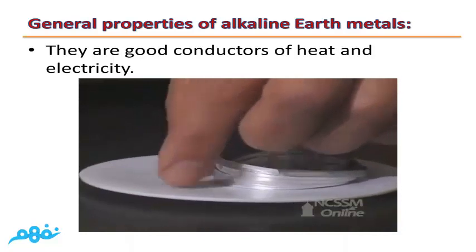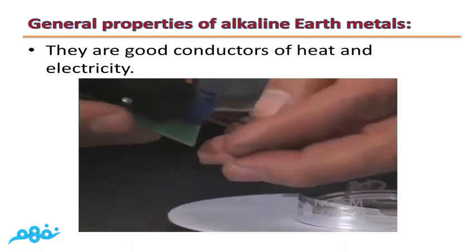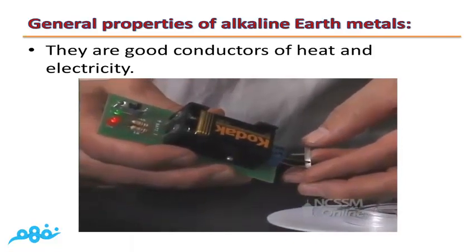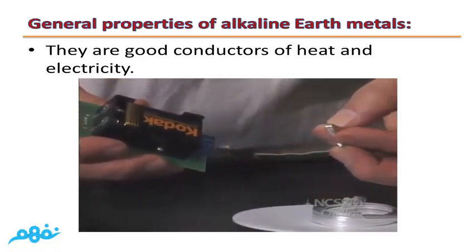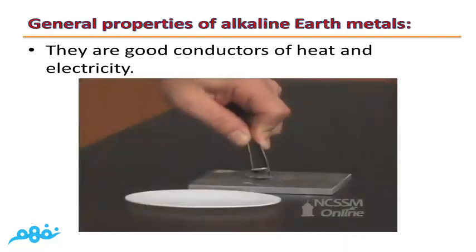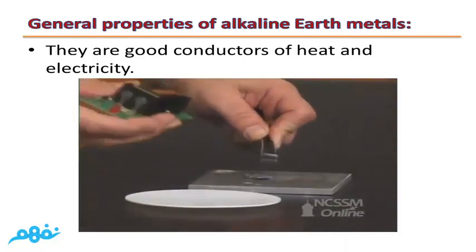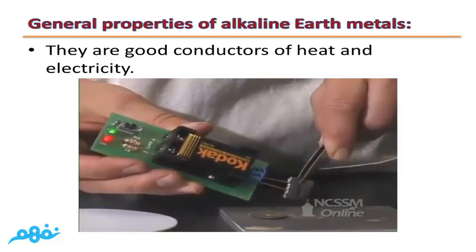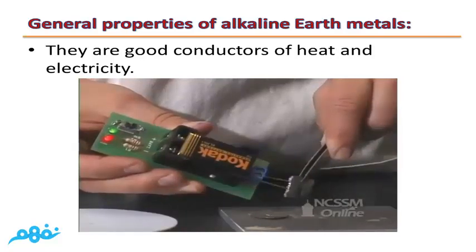General properties of alkaline earth metals: The first property is they are good conductors of heat and electricity. For example, a piece of magnesium is a good conductor of electricity. They are also malleable and ductile because they are metals. A piece of calcium is also a good conductor of electricity. So all elements of Group 2A are good conductors of heat and electricity.